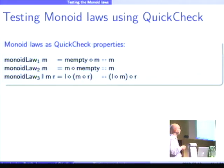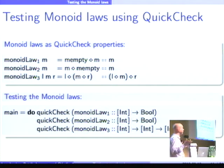Well, I can formulate these laws as QuickCheck laws. This is what you directly get. So, I pass an argument, m, to monoid law 1. And then mempty mappend m, should be equal to m. So, I have boolean expressions.